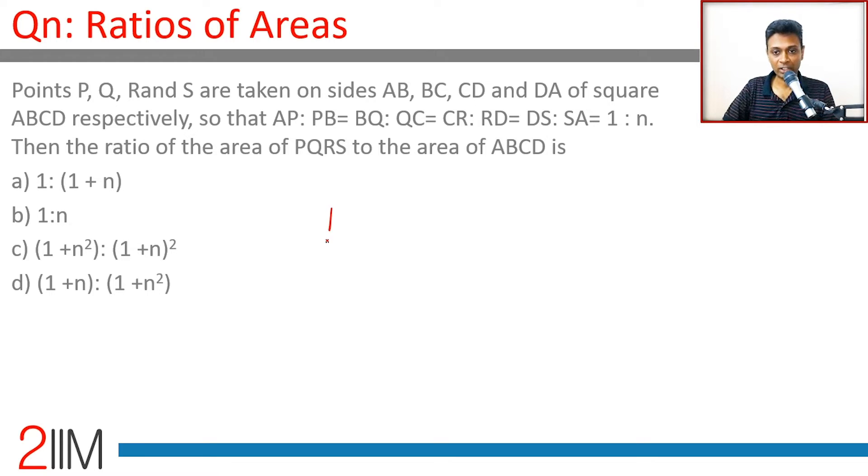Points P, Q, R, and S are taken on sides AB, BC, CD, and DA of a square ABCD respectively, so that AP is to PB, BQ is to QC equal to CR is to RD, this DS is to SA.